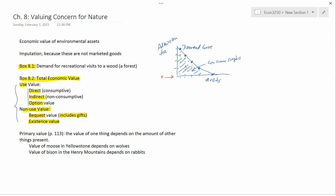I wanted to mention one final thing in this video. Primary value, which is measured on 113. The value of one thing depends on the amount of other things that are present. Let me just give you two examples. The first example is that the value of moose in Yellowstone National Park depends on whether or not there are wolves. So for a large part of the 20th century, there were no wolves in Yellowstone National Park. They had been exterminated by people.